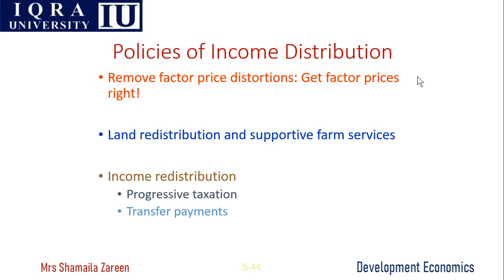Third, the low income and low level of living for the poor — manifested in poor health, nutrition and education — can lower their economic productivity and lead directly and indirectly to slower economic growth. Fourth, raising the income level of the poor will stimulate an overall increase in the demand for locally produced necessary products like food and clothing, whereas the rich tend to spend more of their additional income on imported luxury items. Fifth, the reduction of mass poverty can stimulate healthy economic expansion by acting as a powerful material and psychological incentive to widespread public participation in the development process.